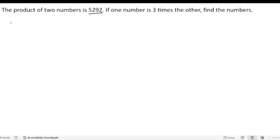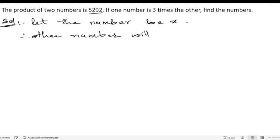Let us take that as x. Shall we start the solution? We will take the number as x. Let the number be x. So they have given the other number. For the other number, what we have to do? Other number will be three times, so 3x.